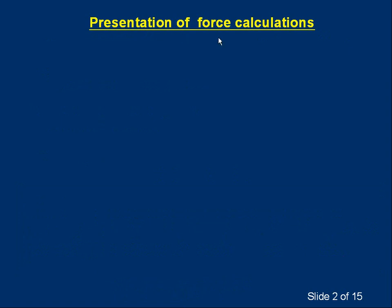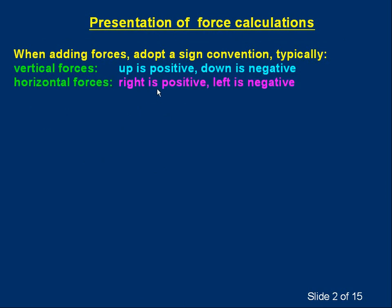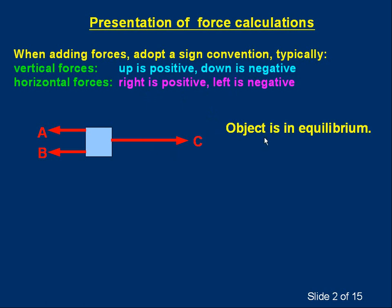First of all, how we're going to present force calculations. When we add forces we have a sign convention: vertical forces up is positive, down is negative; horizontal forces right is positive, left is negative. Here's a simple problem — an object with three forces on it, A, B, and C. We're told the object is in equilibrium, meaning the resultant force on it is zero. So since A, B and C are vectors we write A plus B plus C equals zero. When dealing with forces we add them on the left side of the equation, and if the object is in translational equilibrium the right-hand side must be zero.